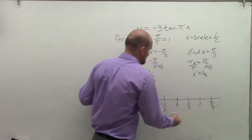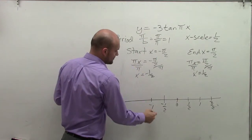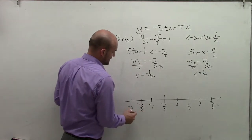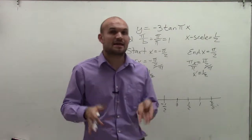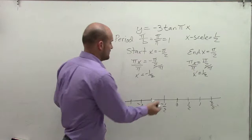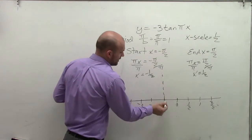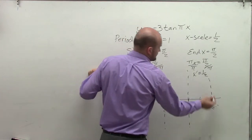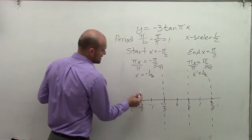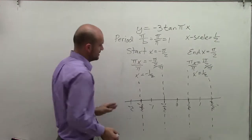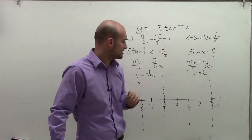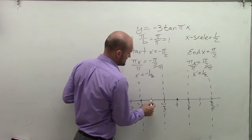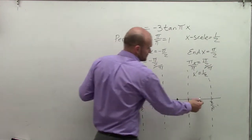I can keep creating this pattern to find all of my critical points—this one would be 3 halves. I can work in the negative direction: negative 1, negative 3 halves, and negative 2. Now it's important to understand the start and end of a tangent graph is where you have your vertical asymptotes.